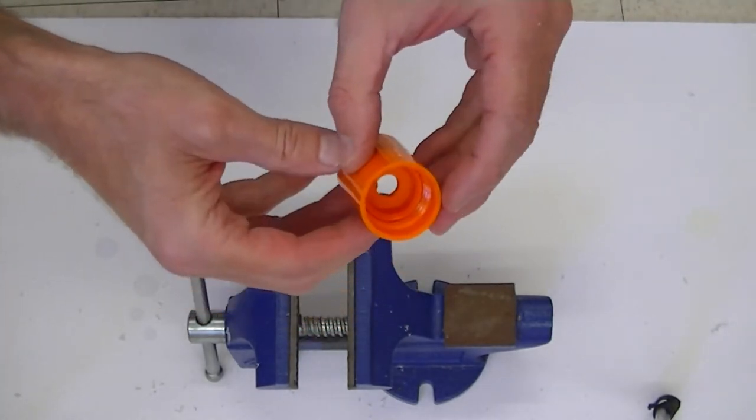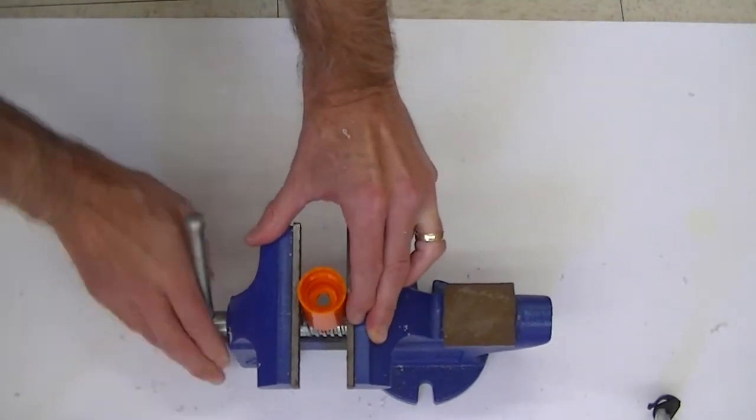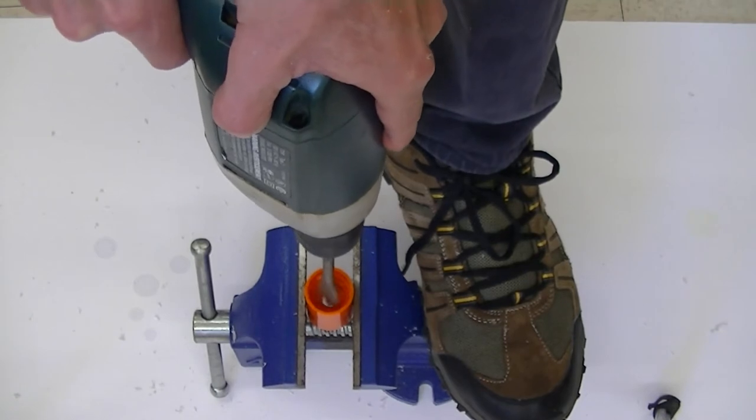Now, we're going to use the 3 1/4 inch boring drill bit to widen the hole in the tornado tube. It's very helpful to clamp the tornado tube in the vise when doing this.